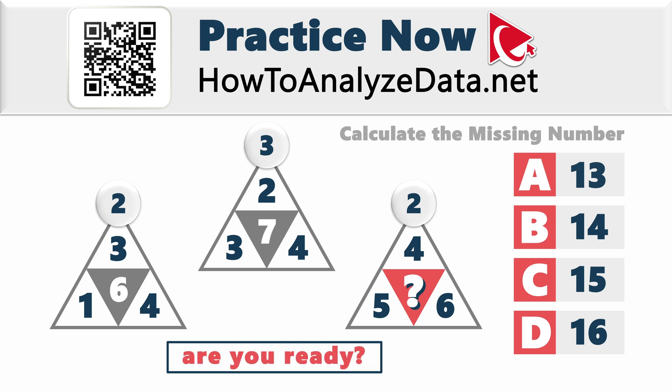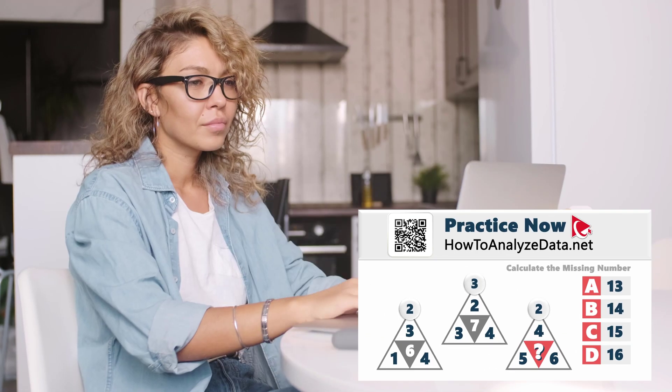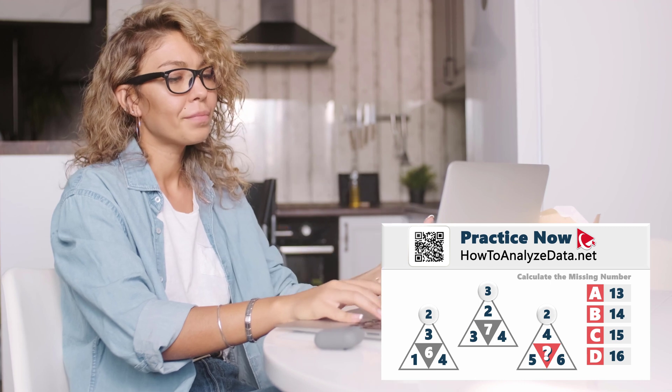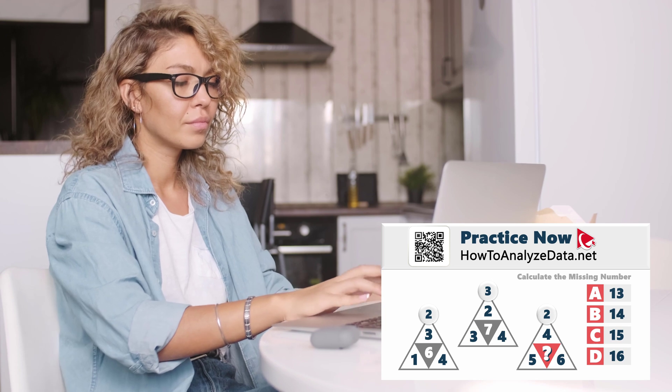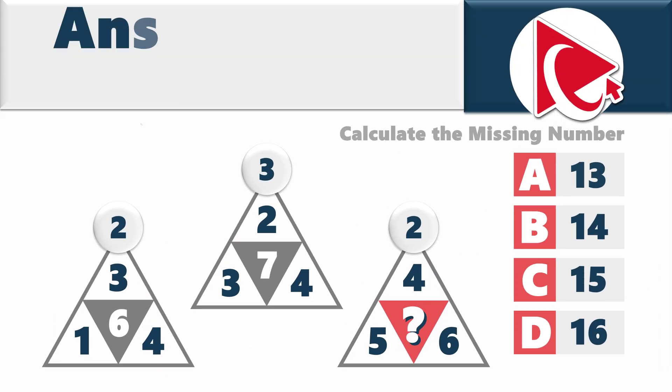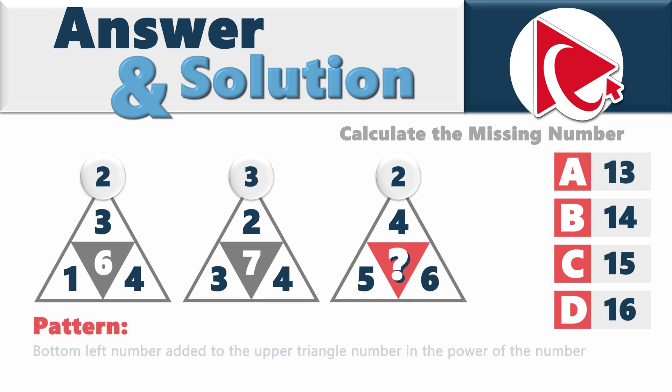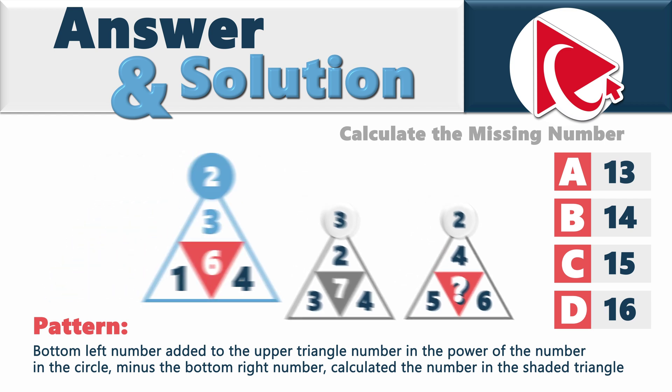Are you ready to showcase your solution? Let's get into it to see how our answers match up. Even if you don't have the answer, don't get discouraged. Keep your spirits up. Every question, whether answered correctly or not, is a chance to gain valuable insights and refine your skills for future success. To solve these types of challenges, you need to detect the pattern. Typically, the missing number is the result of calculations. In this case, the pattern is that the bottom left number added to the upper triangle number in the power of the number in the circle minus the bottom right number calculates the number in the shaded triangle.